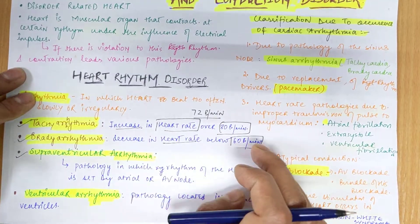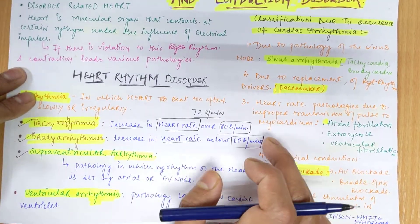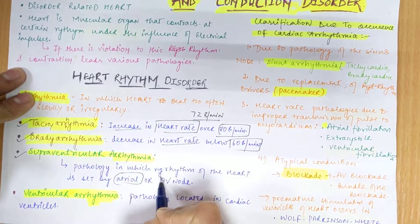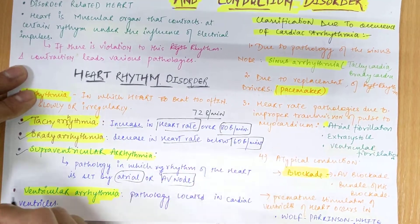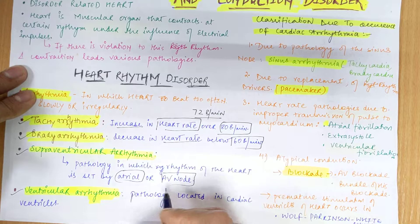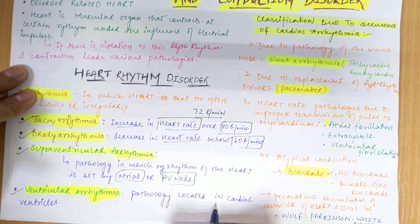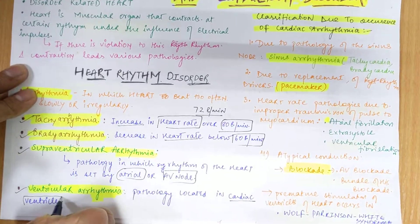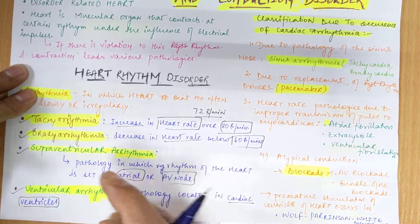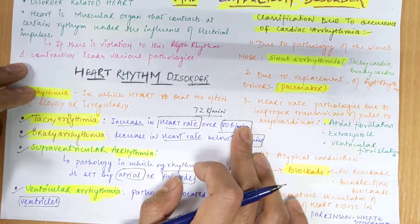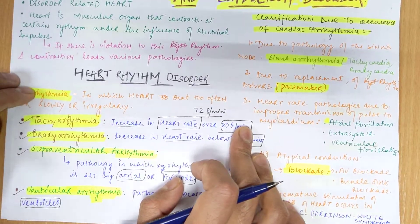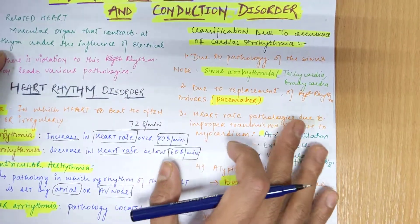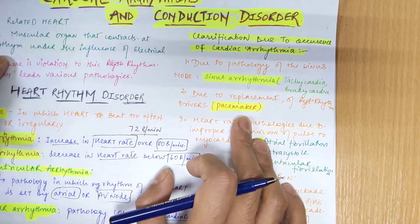There are also supraventricular arrhythmias, a pathology in which the rhythm of the heart is set by the atria or the atrioventricular node — that is the AV node. The fourth type is ventricular arrhythmias, a pathology located in the cardiac ventricles. This arrhythmia is related to the ventricles, which is what is called ventricular arrhythmia. These are the basic pathologies of arrhythmia.